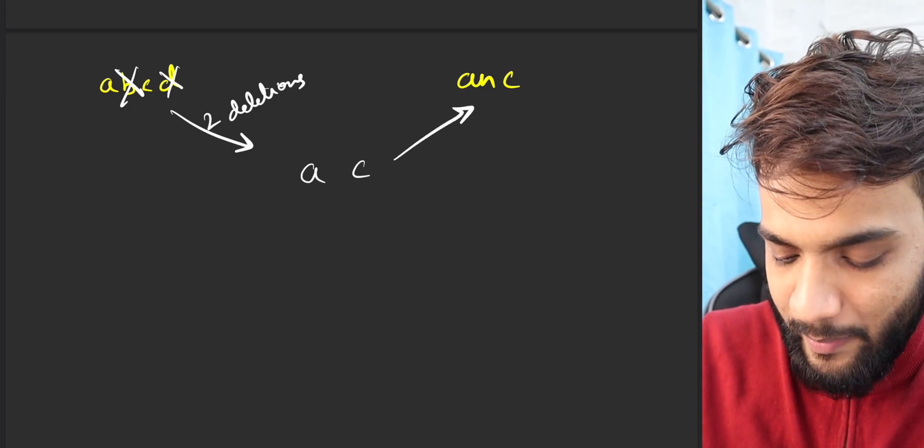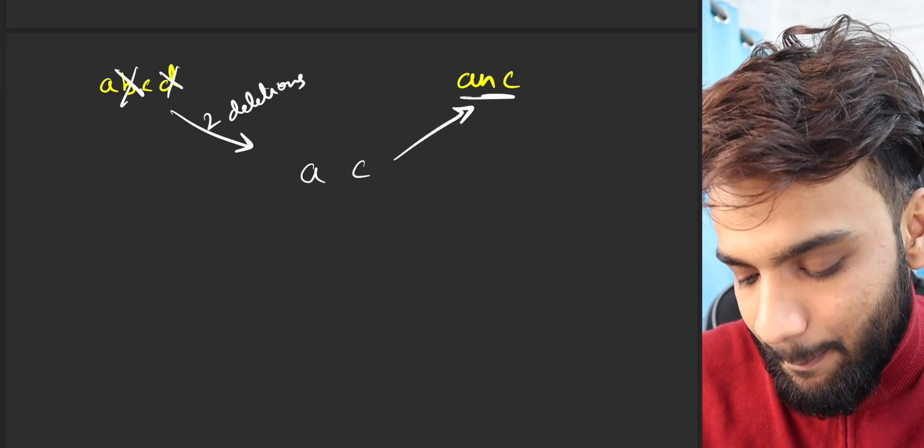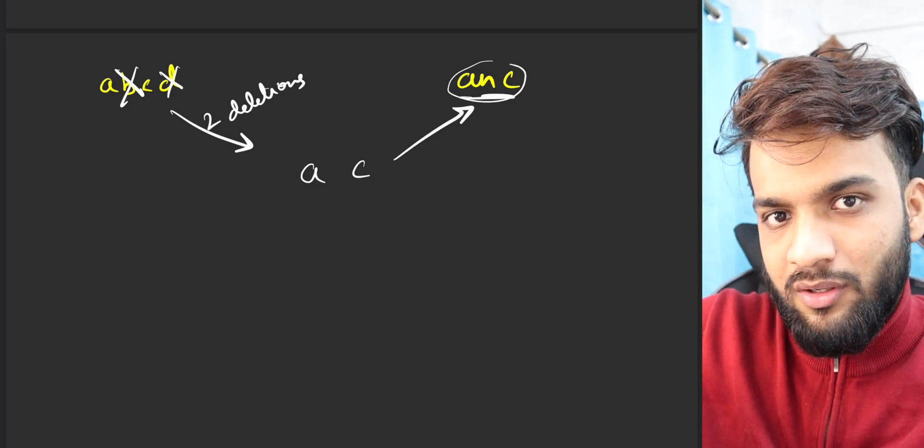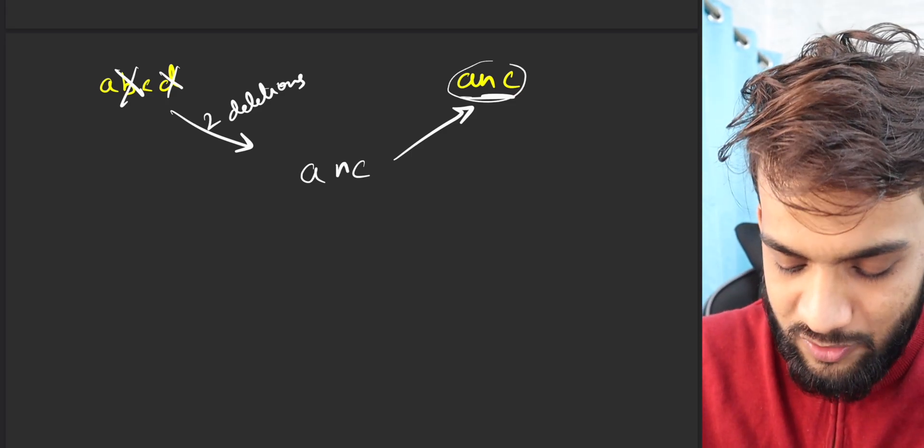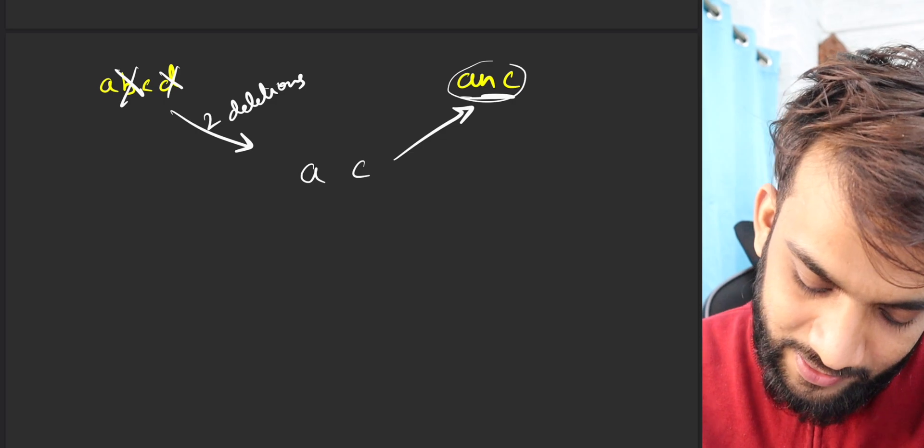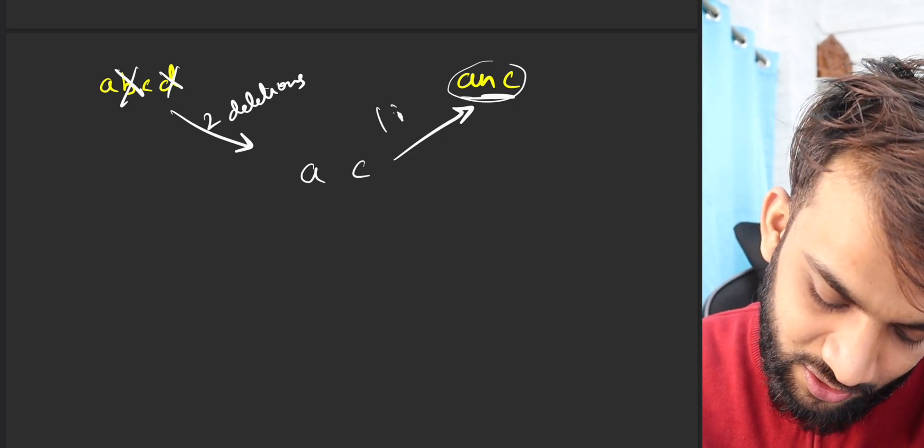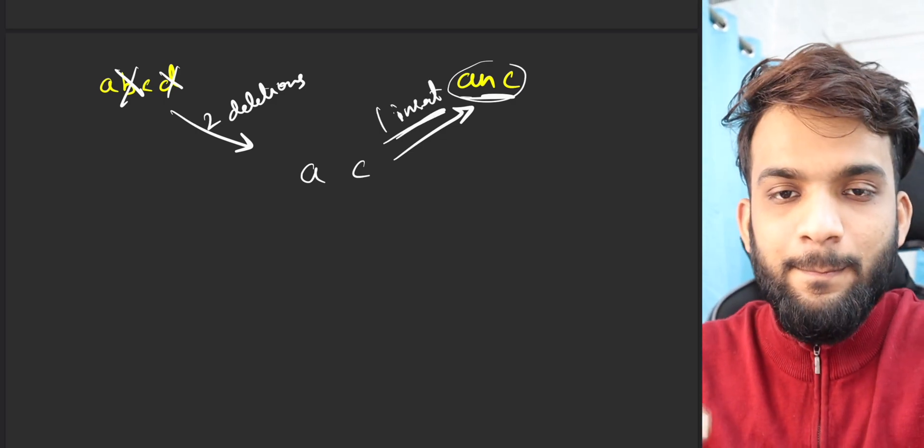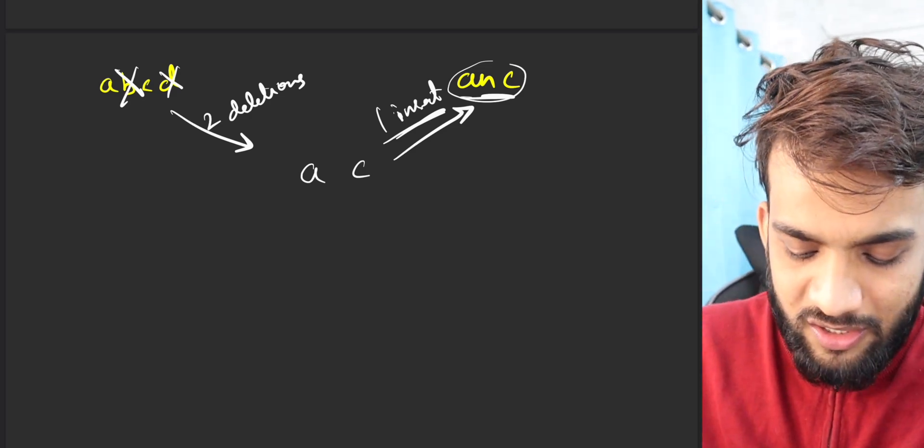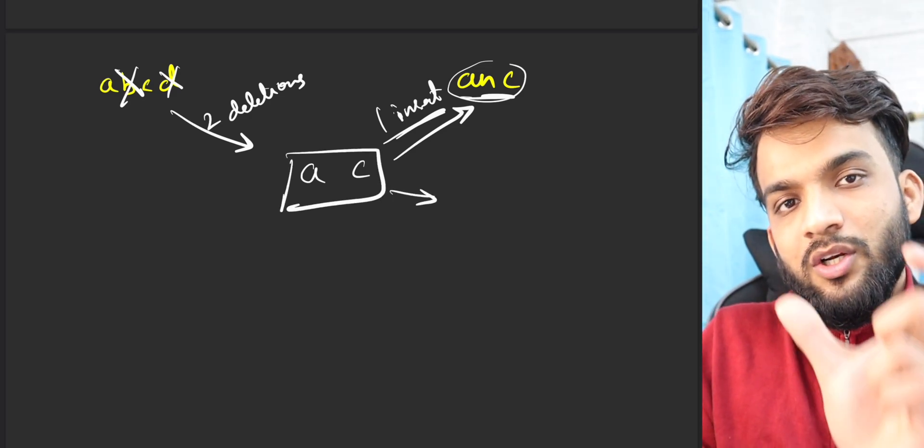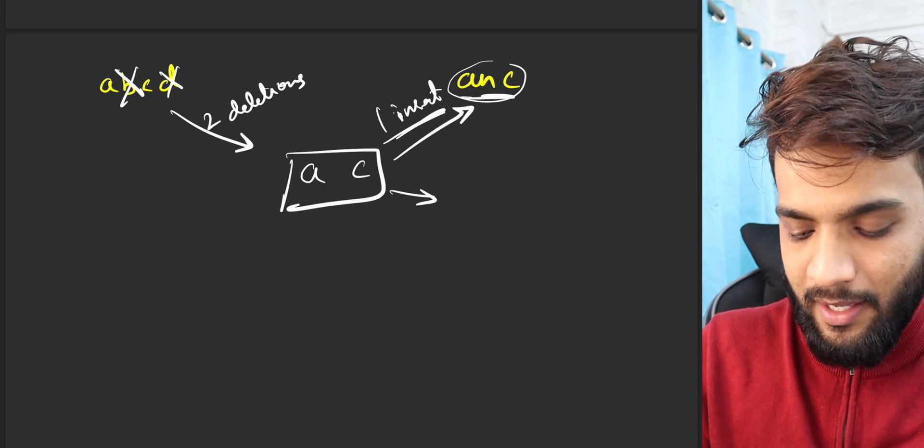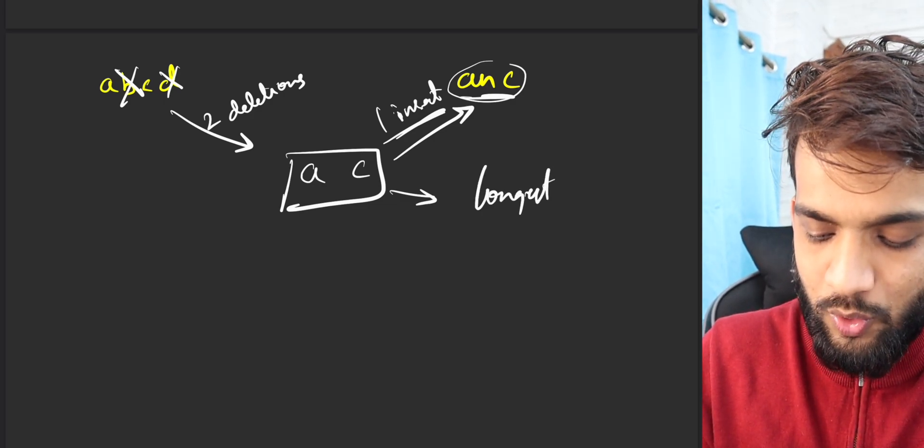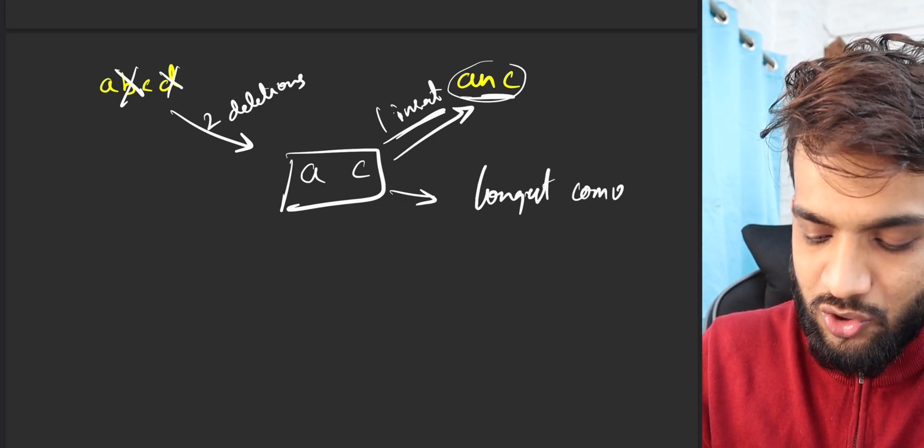And then again, if I want to make this, can I say the number of guys left is one? So you have to make one insertion so that you get that guy. Okay, makes sense. So what is this? This is nothing but the longest matching among them, and I know this is something which is known as Longest Common Subsequence.